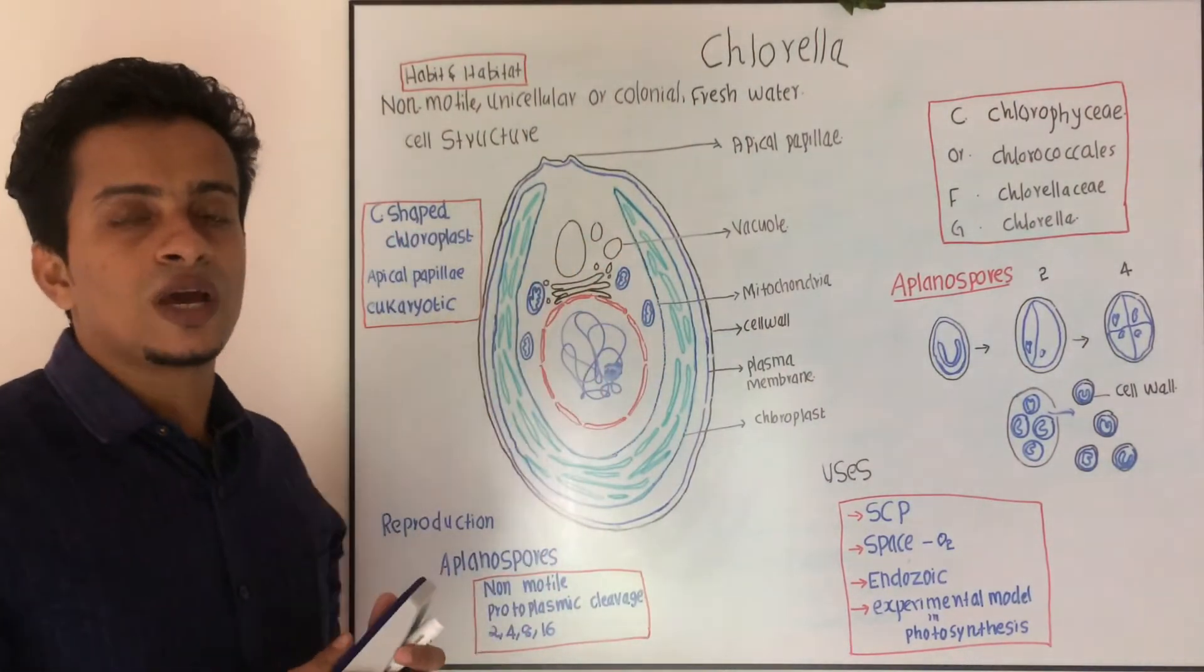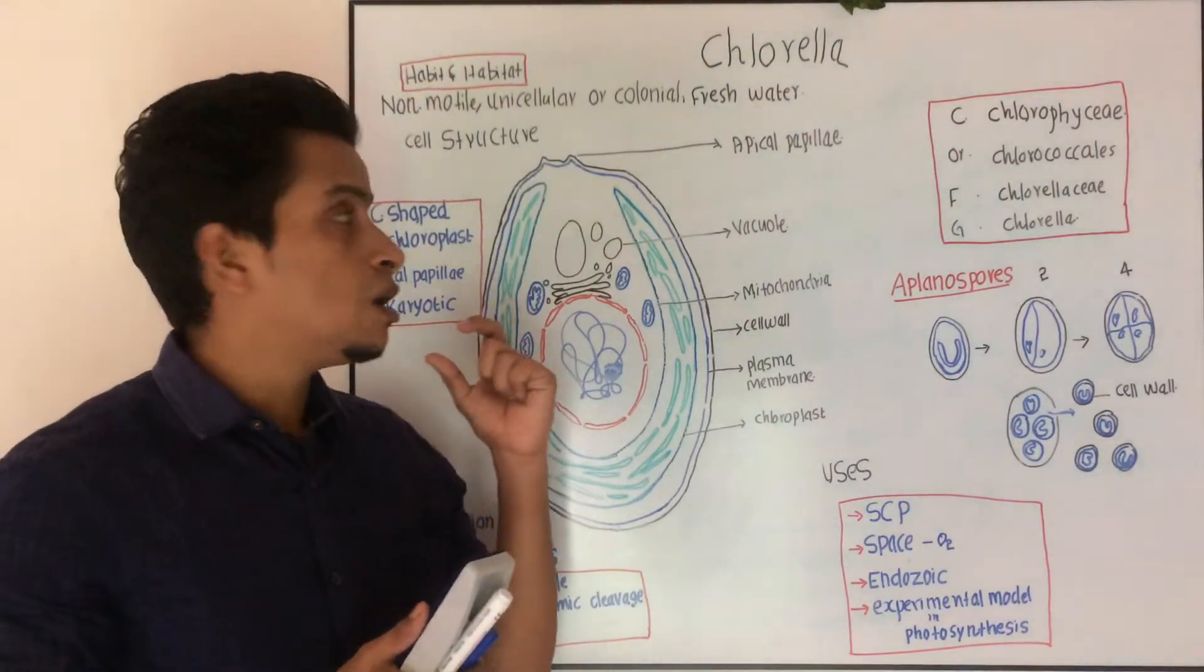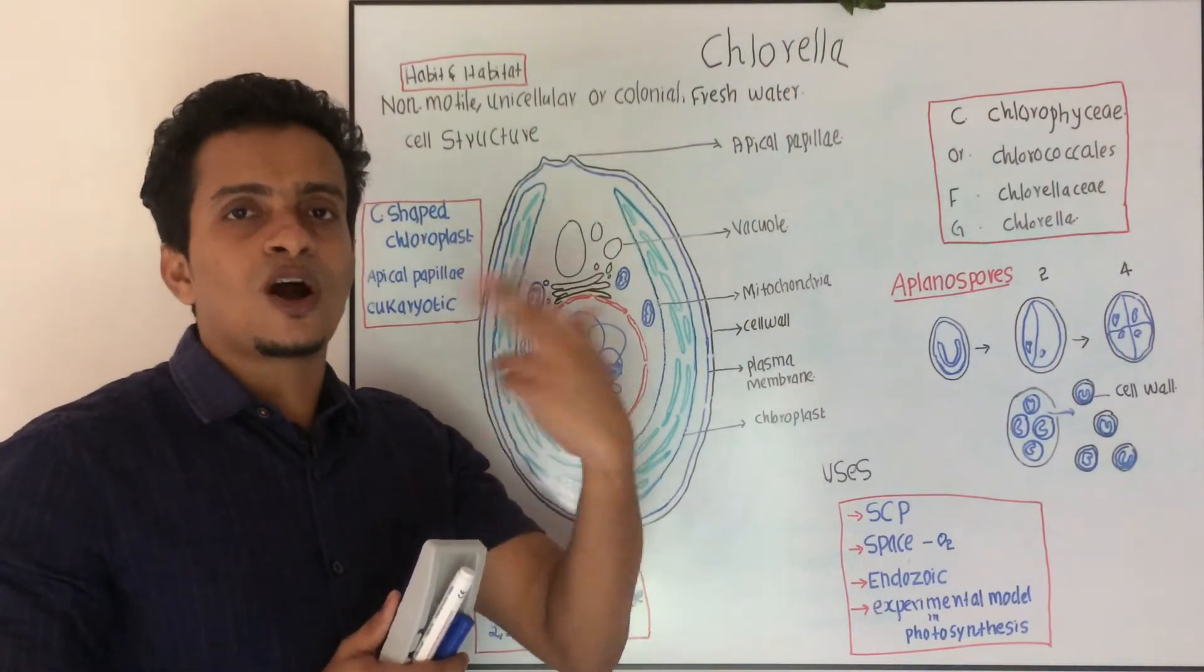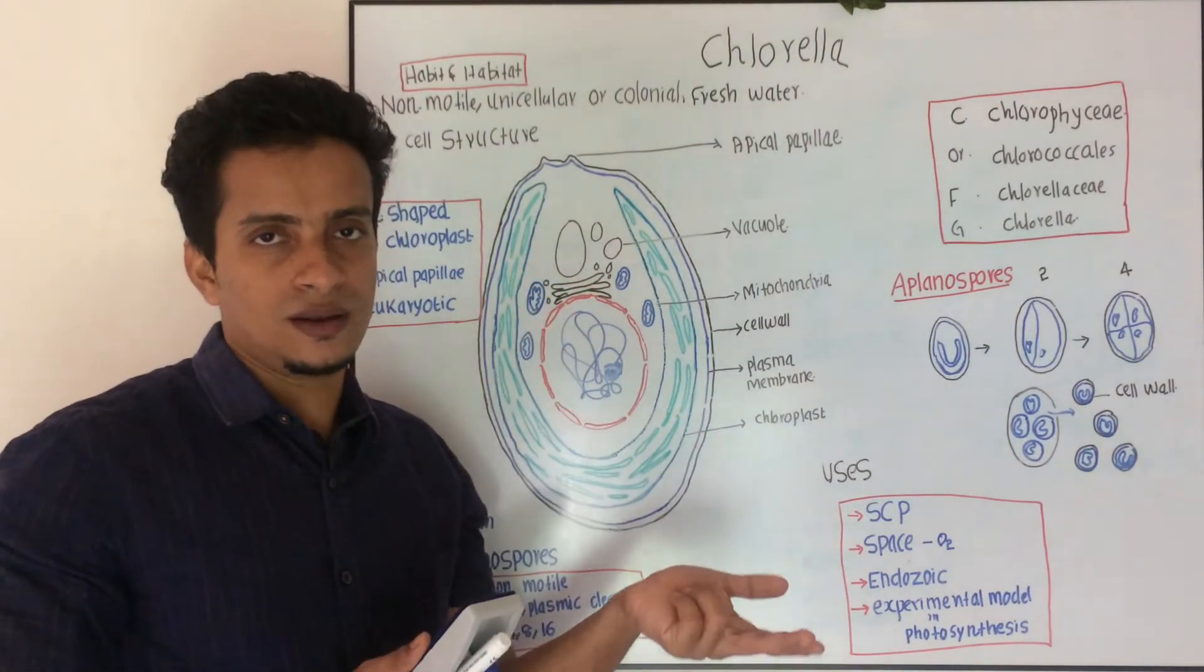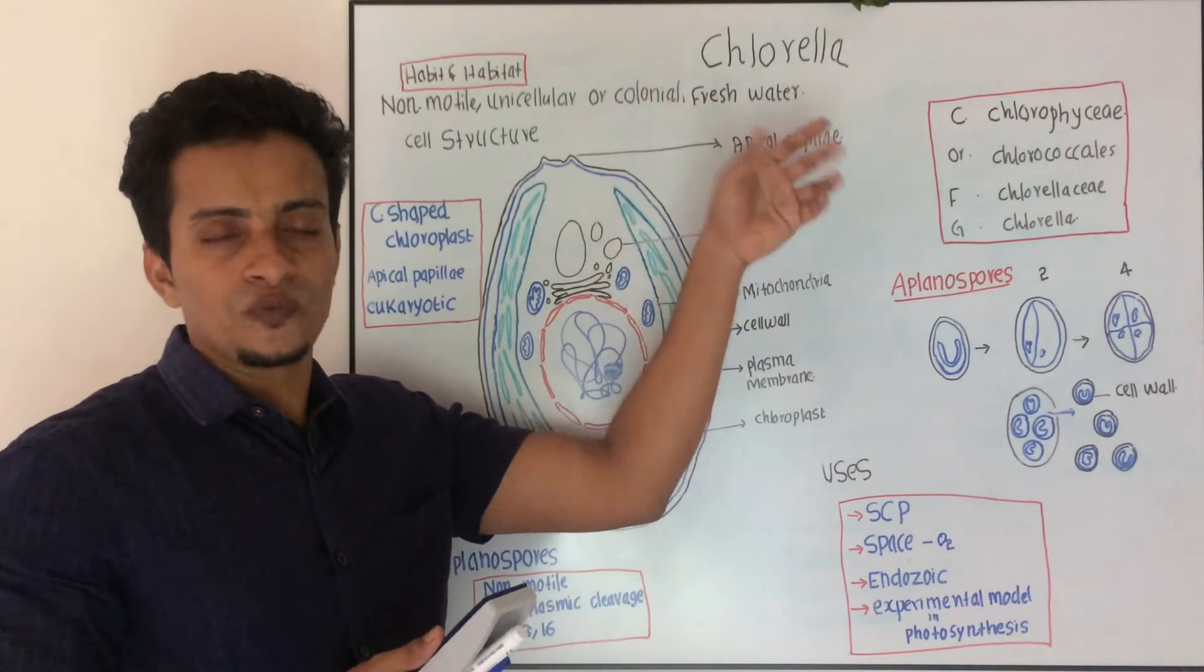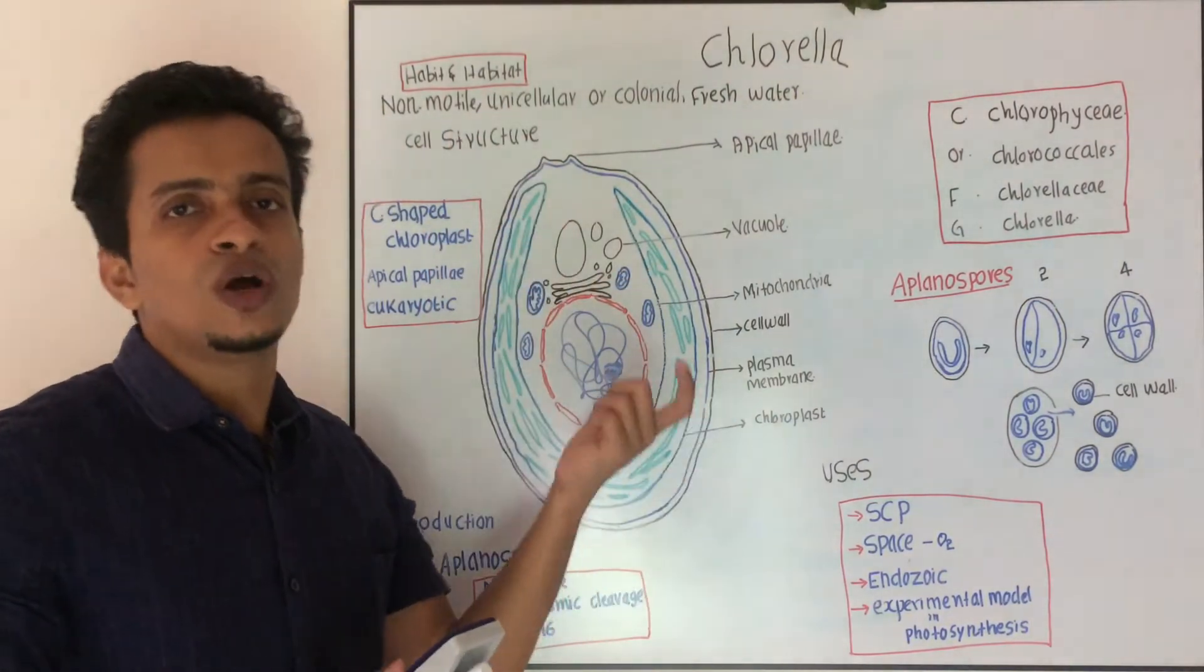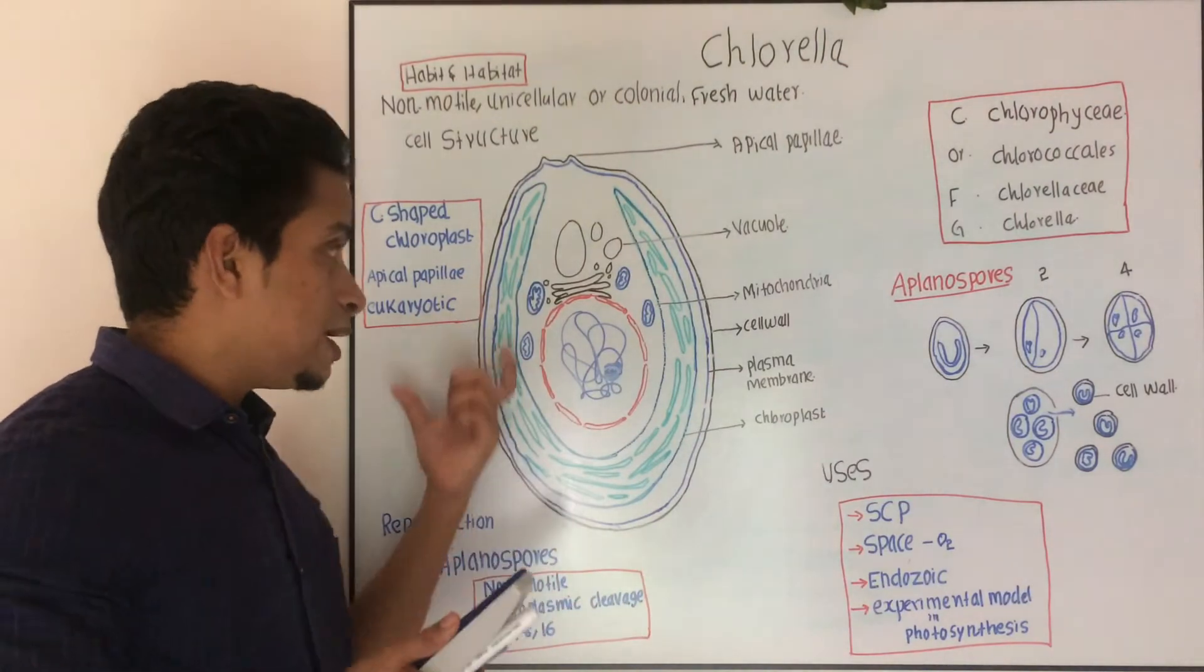Next, we are going to discuss about the reproduction. The only method by which Chlorella can reproduce is aplanospores. What is aplanospore? Its counterpart is zoospore. Zoospores are the spores which are motile, that means flagella will be present. But here, the whole structure is non-motile and reproductive structures are also non-motile. That means you cannot see flagella in this case.